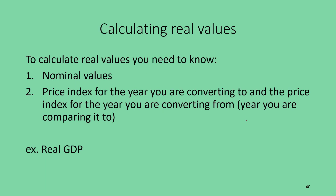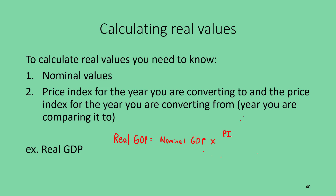To calculate a real value, you need the nominal value, the price index for the year you're converting to, and the price index for the year you're converting from. The formula is: Real GDP = Nominal GDP × (Price Index in year converting to ÷ Price Index in year converting from). For example, to convert 2019 GDP into year 2000 prices, you'd multiply nominal 2019 GDP by the price index for 2000 divided by the price index for 2019.